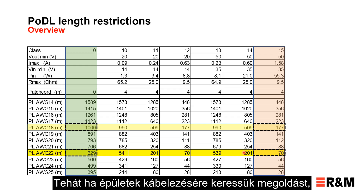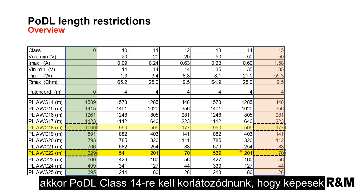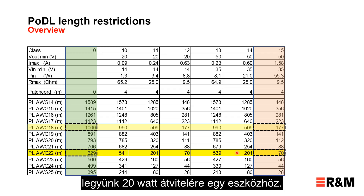So, if we are looking at cabling in the building environment, we would have to restrict the PoDL class to 14 to support only 20 watts to one device.